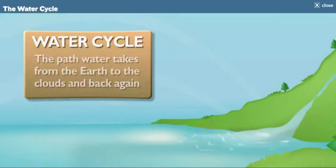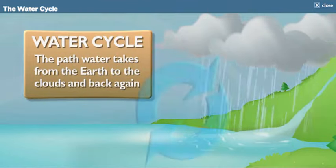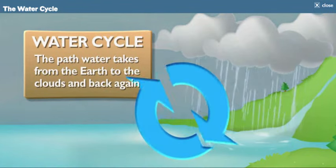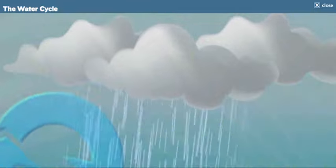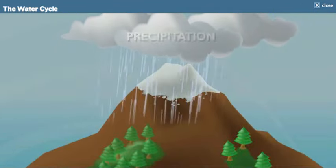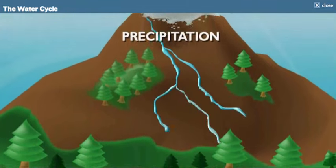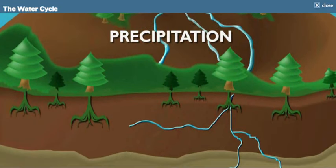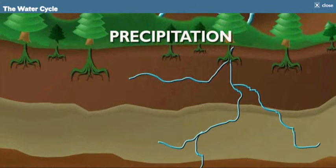The water cycle is the endless path that water takes from the earth to the clouds and then back to the earth again. We already talked about precipitation. Like this rain. Right. Well, when precipitation falls from the sky, it fills the lakes, rivers, and oceans, runs down the mountain, and soaks into the soil.